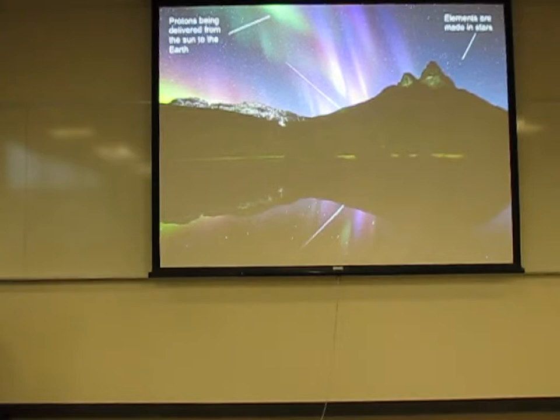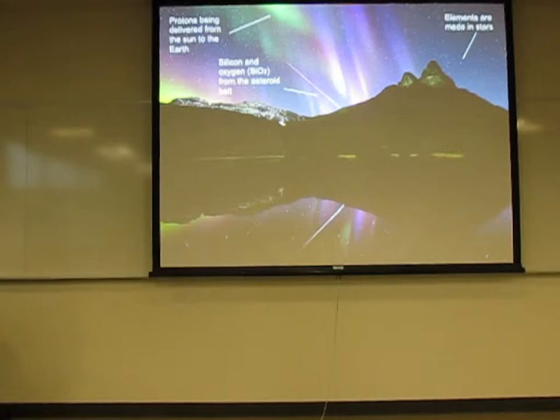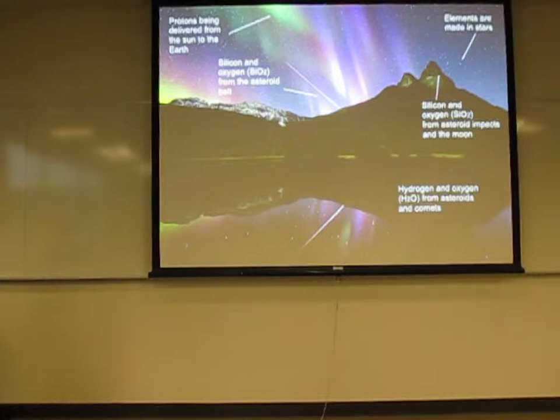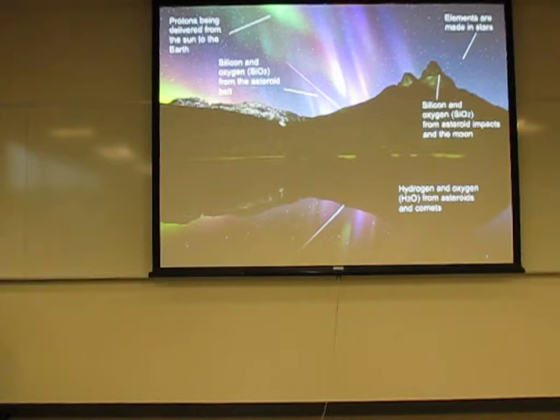If you see a meteor in the sky, that's a piece of an asteroid bringing silicon and oxygen to the Earth as silicate minerals. In fact, all of our minerals are brought to the Earth early on — all those dust particles, silicon and oxygen. And that lake you see is hydrogen and oxygen: water that was brought to the Earth by cometary infall about four and a half billion years ago.